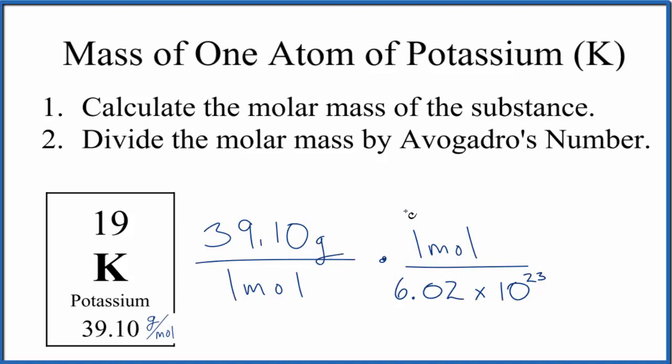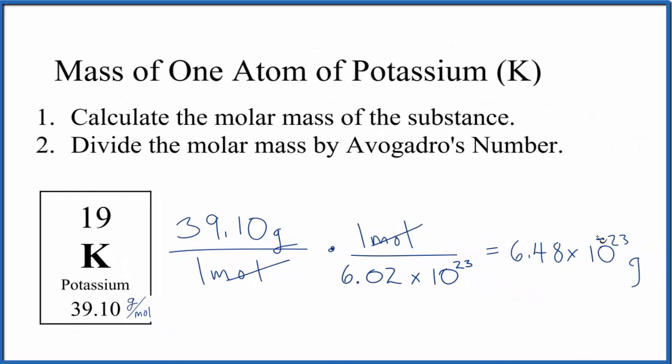But what's nice is because this is a conversion factor, these cancel out, so we're going to end up with grams. So when we divide 39.10 grams by Avogadro's number here, we get 6.48 times 10 to the negative 23rd grams. And that makes sense, we know that atoms are pretty small, so we should end up with a very small number.